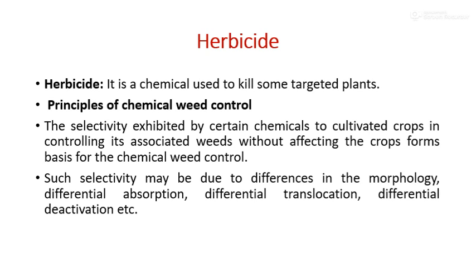Principles of chemical weed control: The first principle is the selectivity exhibited by certain chemicals to cultivated crops in controlling their associated weeds without affecting the crop, which forms the basis for chemical weed control. Such selectivity may be due to differences in morphology, differential absorption, differential translocation, and differential deactivation, etc.